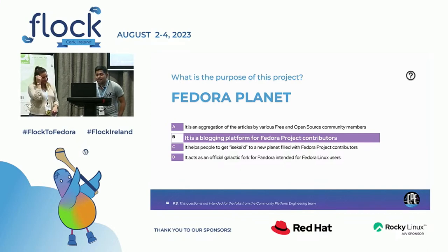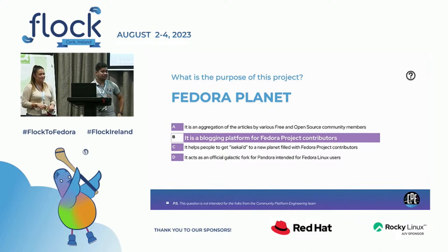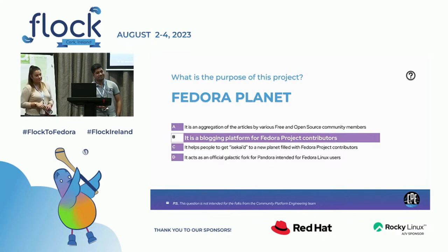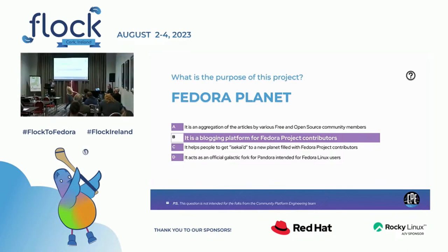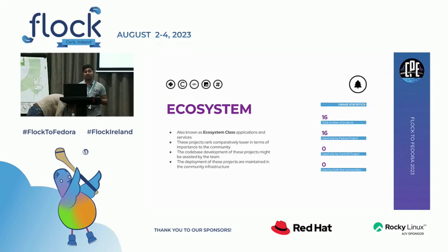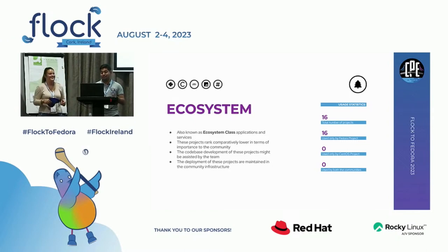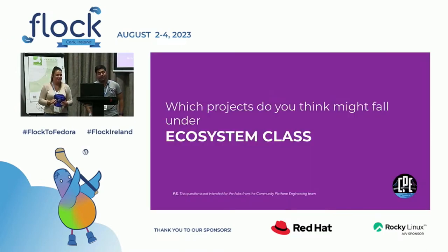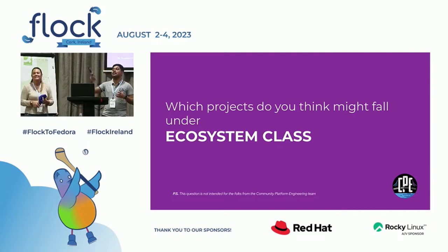The answer is A. Fun fact: Fedora Blogs was an early project — we used to have our own WordPress instance back in the day. The correct answer for the Fedora Planet question is A. Moving on, the last category is ecosystem applications, which enrich quality of life for contributors. It seems CentOS project contributors are so motivated they don't need those apps. Audience guesses include badges.